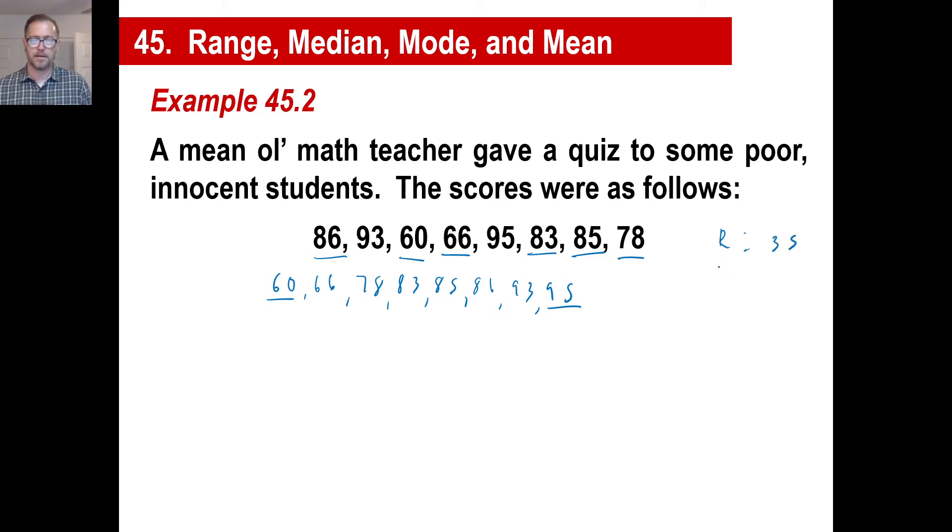All right. The median, that's going to be the number in the middle, where there aren't any numbers in the middle. So there we go. Those are our two numbers in the middle. Obviously, the number right between 83 and 85 is going to be 84. There's your median. Okay. The mode, really there is no mode. There's nothing that appears the most. We don't really have a mode, a specific one.